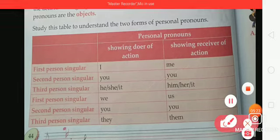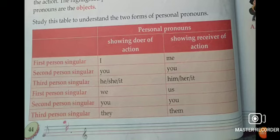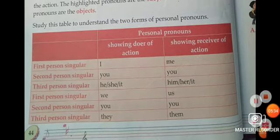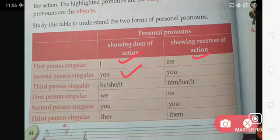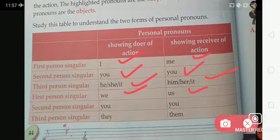First person singular: doer of action is 'I', receiver of action is 'me'. Second person singular and plural: 'you' for both. Third person singular: he/she/it → him/her/it. First person plural: 'we' → 'us'. Second person plural: 'you' → 'you'. Third person plural: 'they' → 'them'. Just like this, you will use the doer and the receiver of the action.